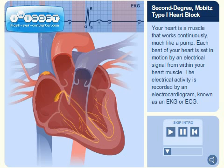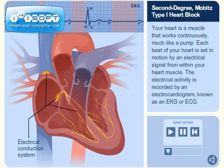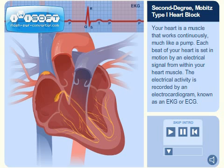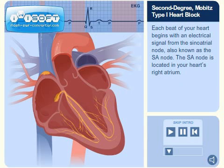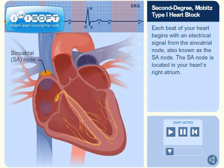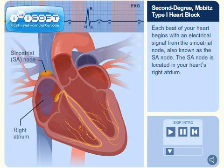Your heart is a muscle that works continuously, much like a pump. Each beat of your heart is set in motion by an electrical signal from within your heart muscle. The electrical activity is recorded by an electrocardiogram, known as an EKG or ECG. Each beat of your heart begins with an electrical signal from the sinoatrial node, also known as the SA node. The SA node is located in your heart's right atrium.